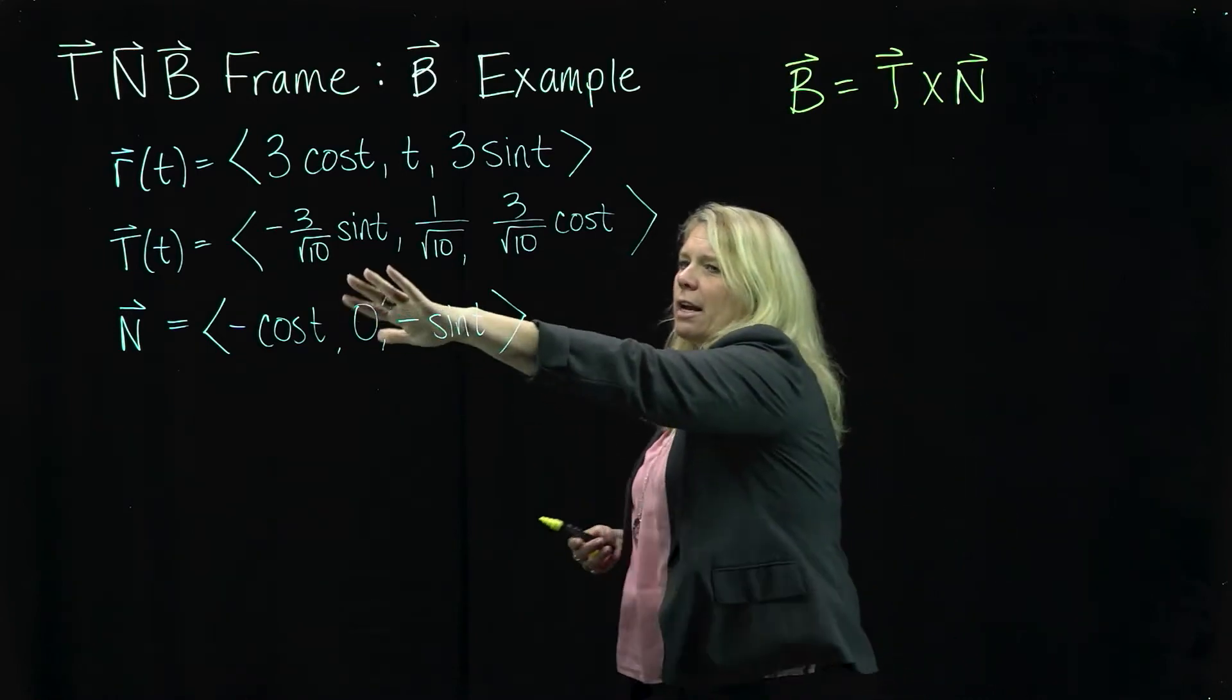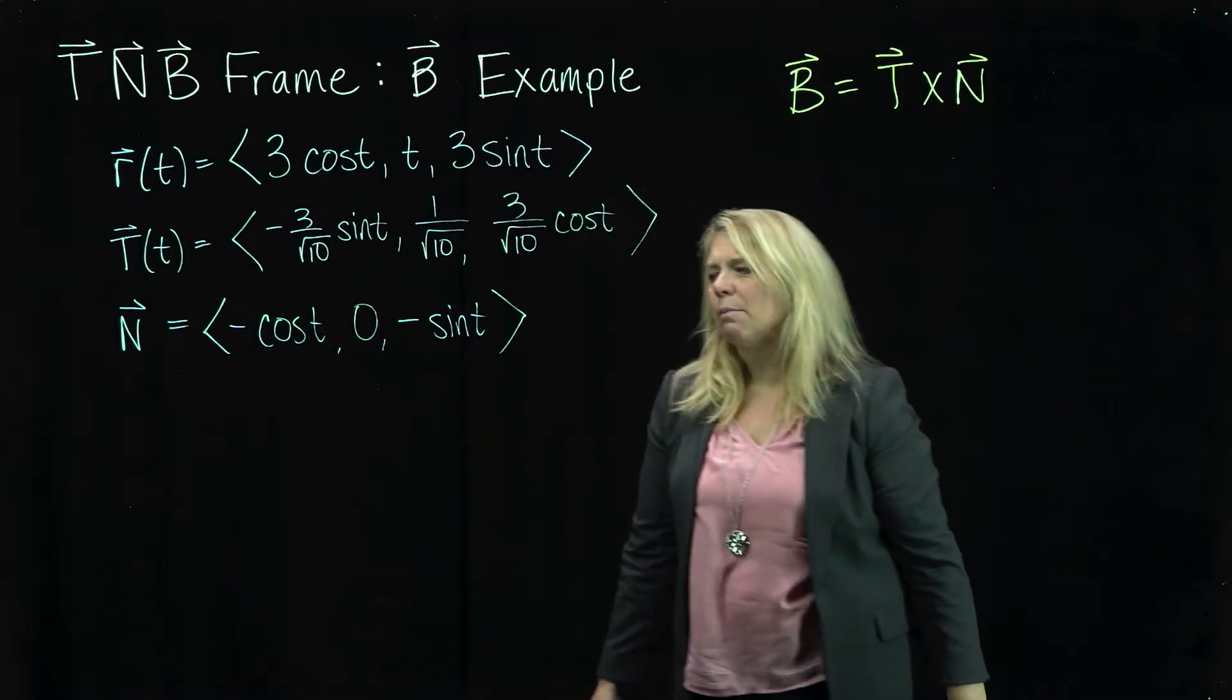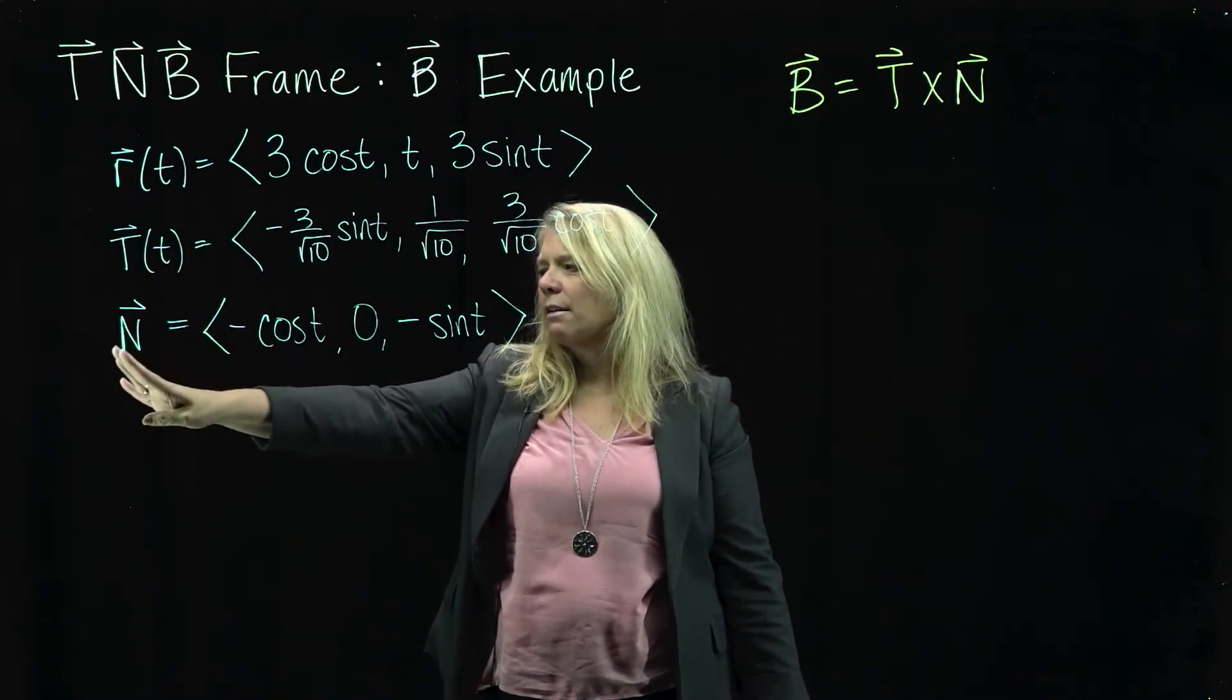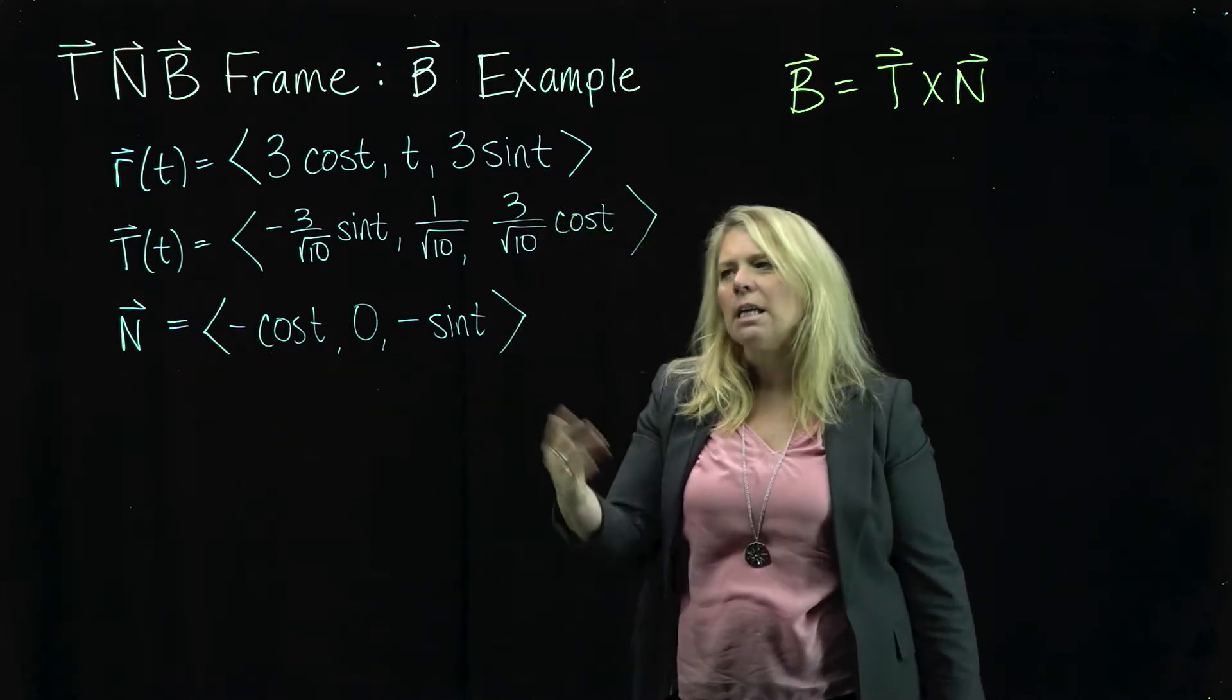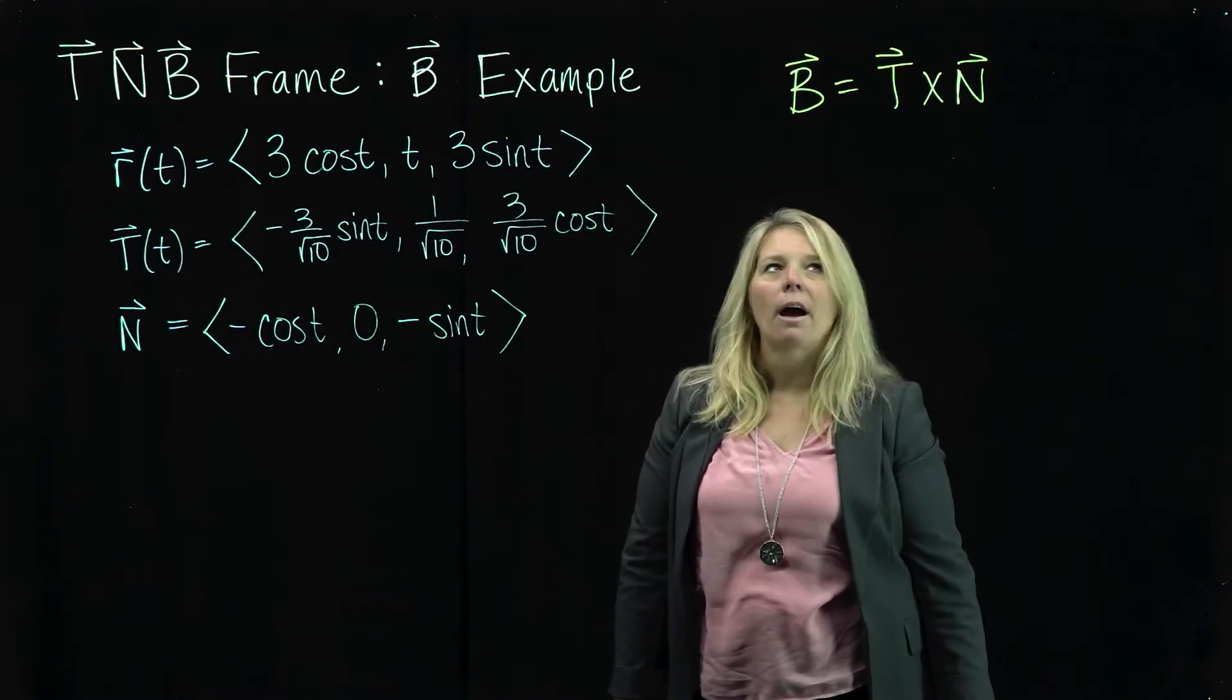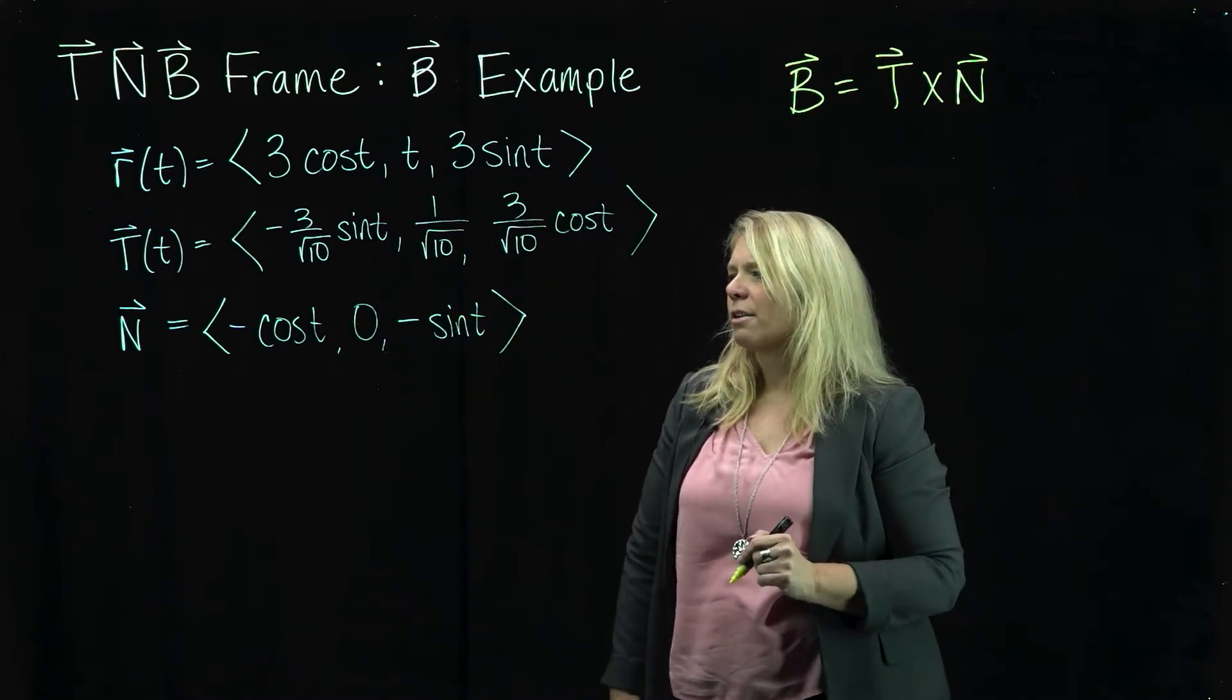I've got my T vector here from previous examples. I've got my N vector here from a previous example as well. Notice here I had written T of T and I didn't write N of T, I just wrote N, but obviously that N is a function of T. You'd want both of these using the same parameterization obviously before you do that cross product. So we used this T vector to get that N vector though.